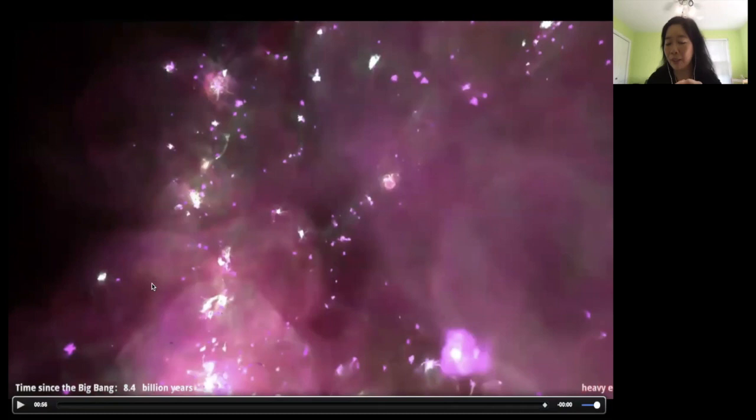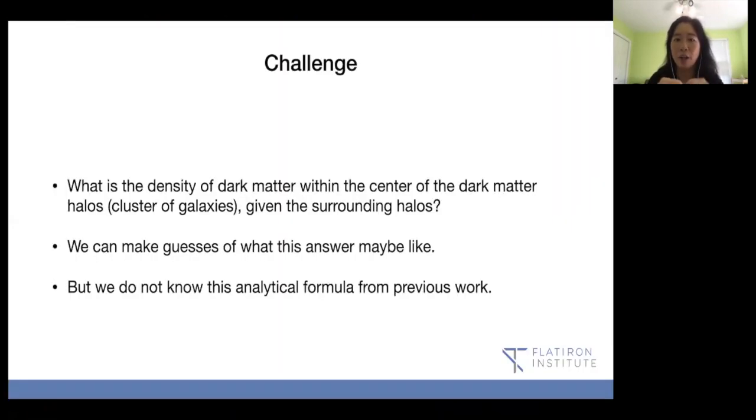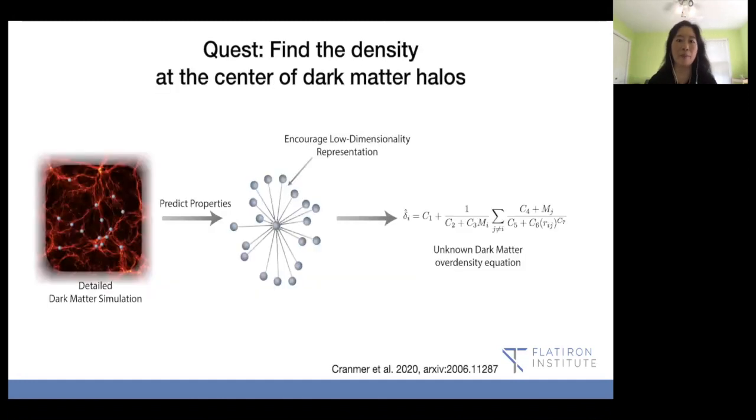So with this complex universe, we want to ask ourselves, for just the dark matter side, for the dark matter halo, can we predict the density of the dark matter within the center of these halos, the center of the metropolitan cities of galaxies, given all the surrounding halos, the surrounding metropolitan cities of galaxies. We can make guesses of what this answer may be like, but we don't know this analytical formula from previous work. So that's what we challenge ourselves with. We put in this detailed dark matter simulations, not the one I showed you earlier, but this is the one that just have only dark matter. And you can see where the dots are actually here. They start where we put all the dark matter halos. And you want to say for this dark matter halo, the central density of this dark matter halo, what is it when you put in all the other nodes in this graph right here.